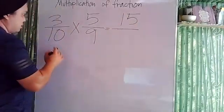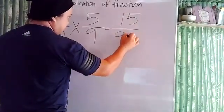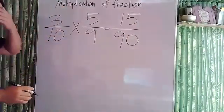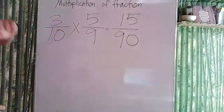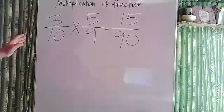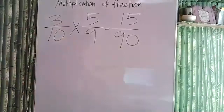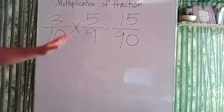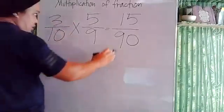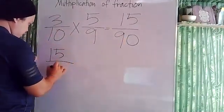So let's multiply: 3 times 5 is 15, and 10 times 9 is 90. Multiply the numerator and the denominator and simplify if possible. We can simplify this because we can divide both by 15.